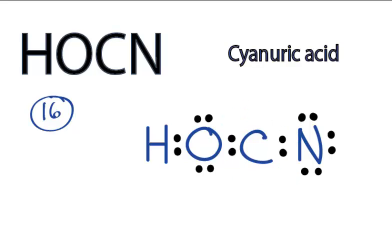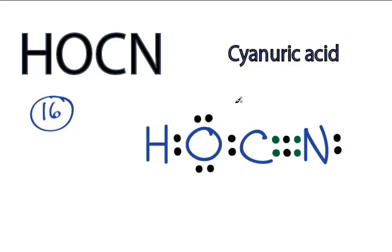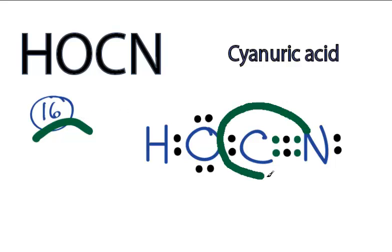Since nitrogen is least electronegative here, I'll take two from the nitrogen and share them with the carbon to form a double bond. So the nitrogen still has eight valence electrons, but now the carbon has six, so let's take another two from the nitrogen and share them with the carbon to form a triple bond. Nitrogen still has eight, and we're still using the 16 valence electrons for the HOCN Lewis structure, but now the carbon has eight as well.